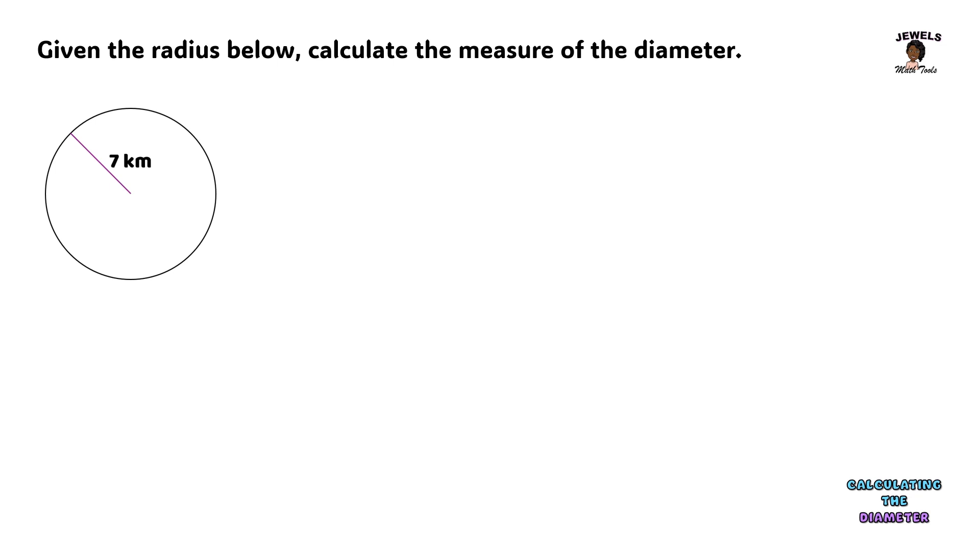Now the relationship between the radius and the diameter is one that we have to remember. So remember that the diameter simply measures 2 times the length of our radius. That means whatever our radius length is, to find the diameter we are going to multiply that by 2.